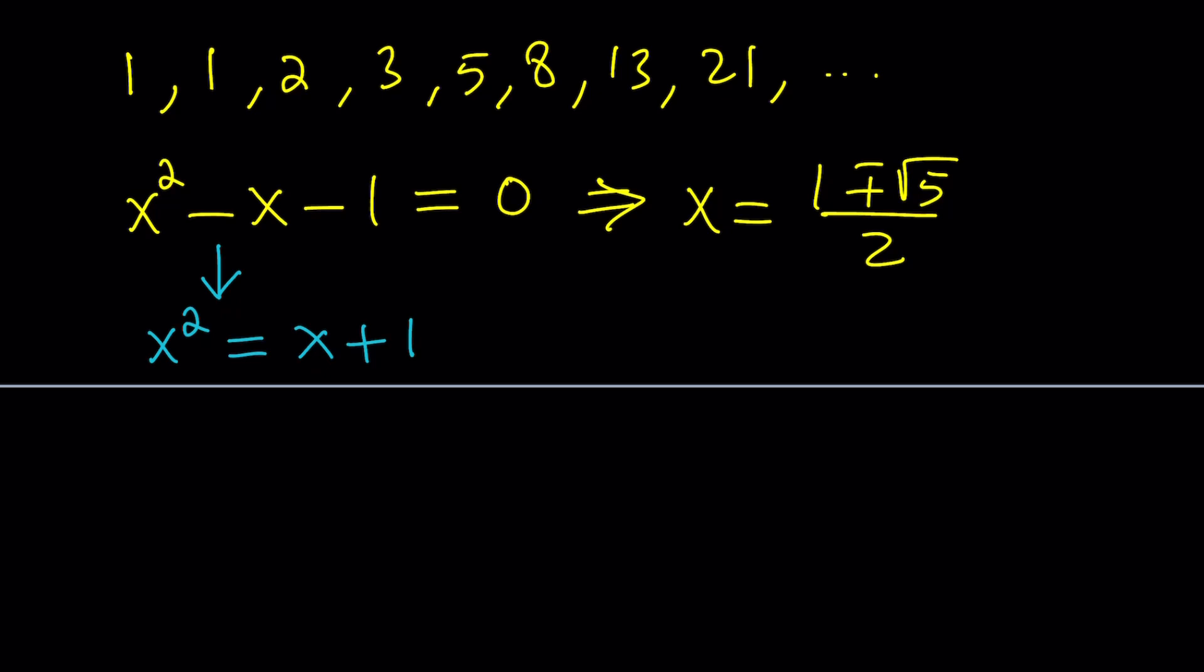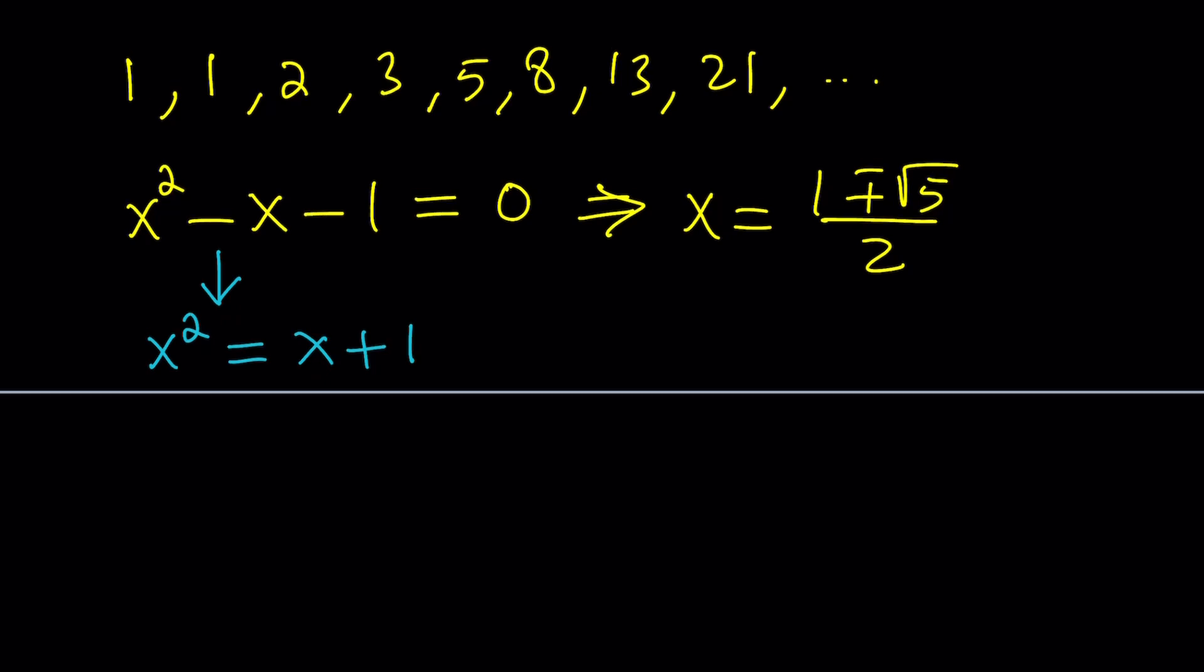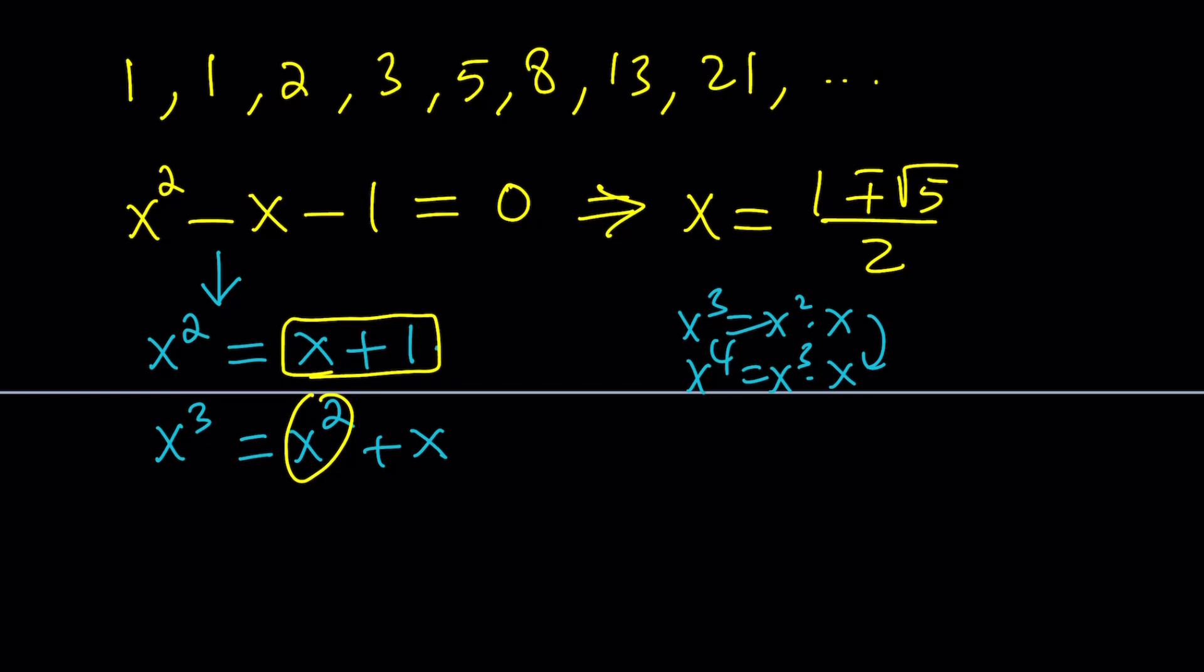So, if x squared equals x plus 1, I'm going to go ahead and evaluate x cubed in terms of x. And, that can be done by just multiplying x squared by x. Now, think about it. x cubed is x squared times x. x to the fourth is x cubed times x. So, every time, I'm going to multiply by x. When you multiply this expression by x, you get x squared plus x. But, you've got to remember, x squared can always be replaced with x plus 1. That's our magic formula or magical formula. And, this is going to give us 2x plus 1. Now, pay attention to that. And, we're going to write a couple more terms.